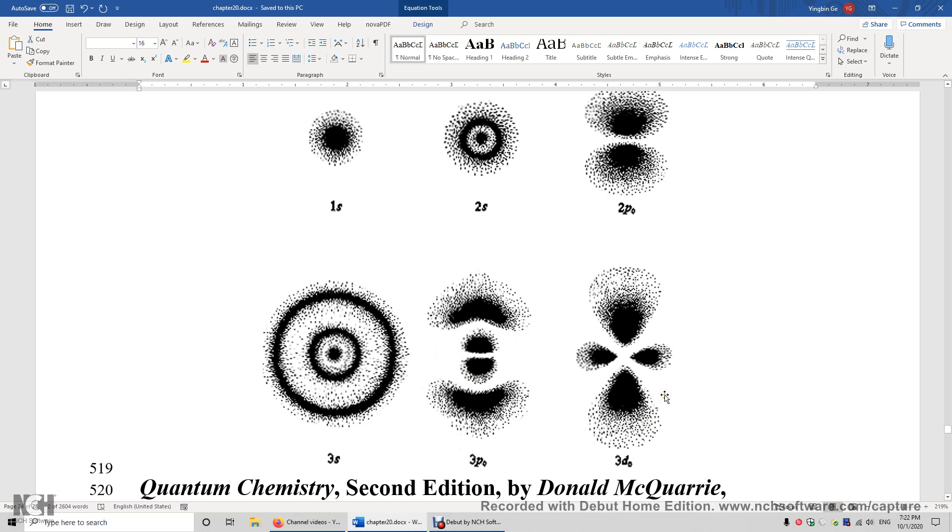The wave function is proportional to 3z squared minus R squared. Therefore, when 3z squared is equal to R squared, you have two nodal surfaces. They correspond to z equals plus minus R over the square root of 3.